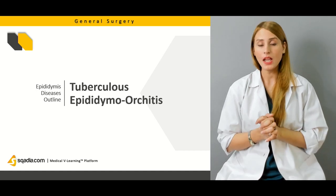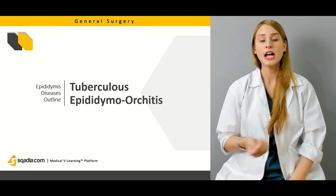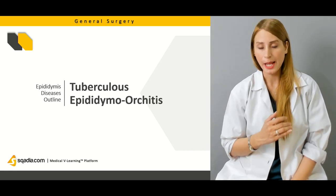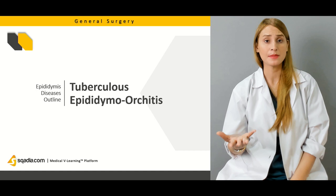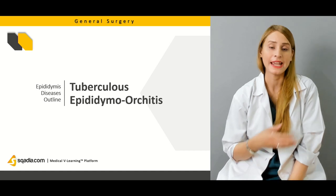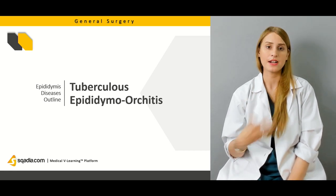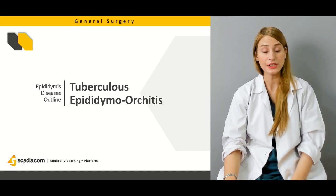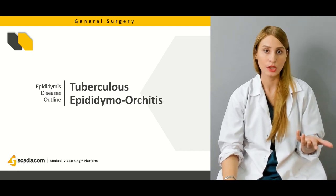Another very important topic is tuberculous epididymal orchitis. We'll talk about its presentation, the kind of fibrosis involved, and the distinction between primary and secondary tuberculous epididymal orchitis. Patients need to be put on anti-tuberculous therapy, and in cases of prolonged inflammation causing extensive fibrosis with testicular infarction or atrophy, surgical treatment such as orchidectomy or epididymectomy is required.